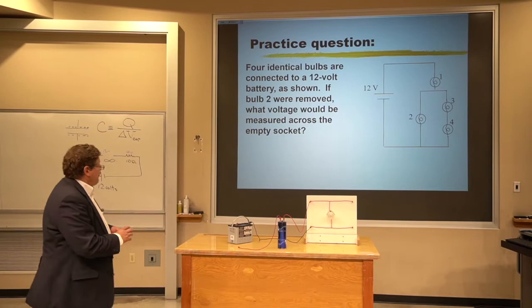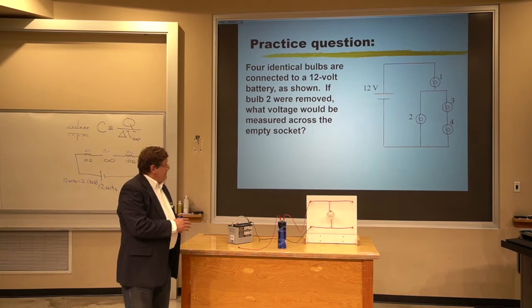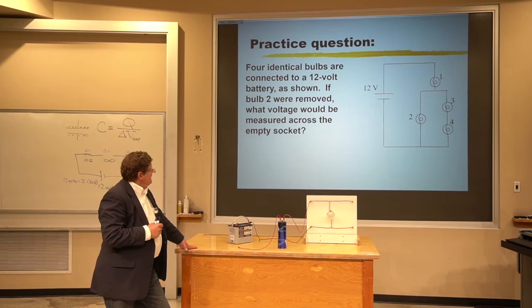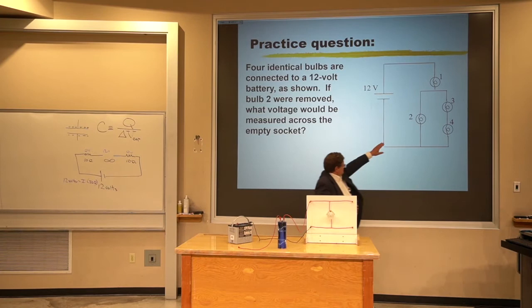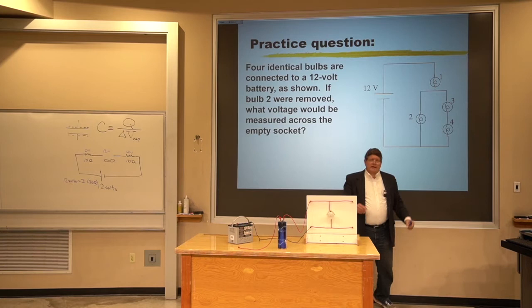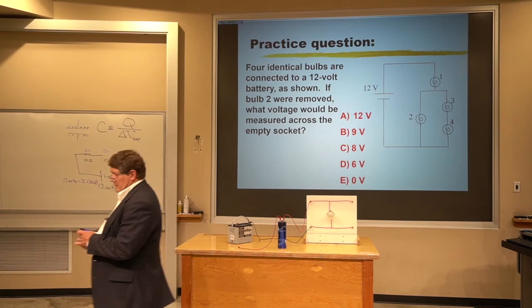I have four identical bulbs connected to a 12-volt battery. You know bulb one is the brightest, bulb two is second brightest, and three and four are tied for last. But what if we took out bulb two and left the empty socket behind? If I were to take a voltmeter and measure the voltage across that empty socket, what would I read? Your possible answers are 12 volts, 9 volts, 8 volts, 6 volts, or 0 volts.